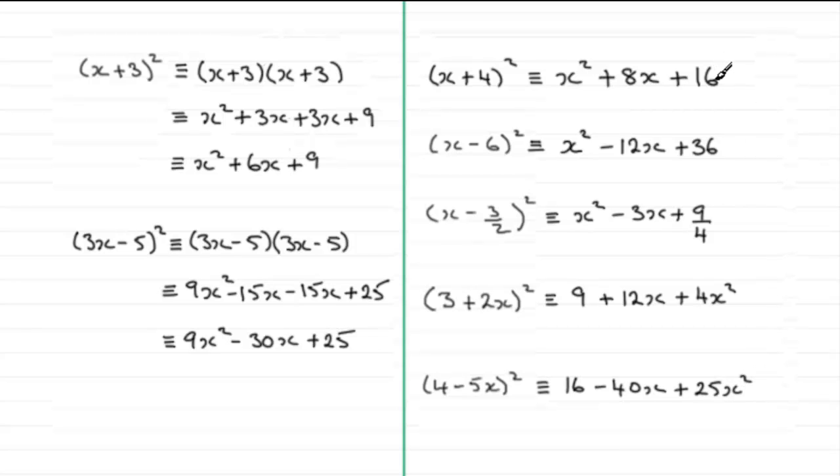Notice by the way how always the last term here, whether we've got a negative in here or a positive, it always turns out to be a positive term on the end. Okay? Well I hope that's given you an idea then of how we can quickly go about squaring a bracket. Don't make that classic mistake where you just square the first term and square the last term.